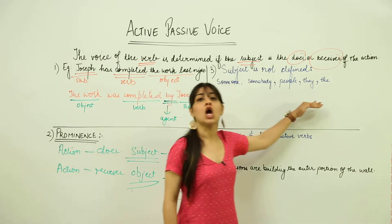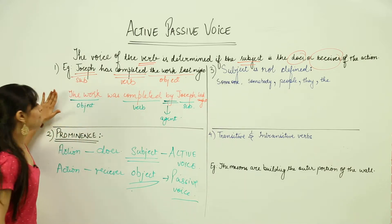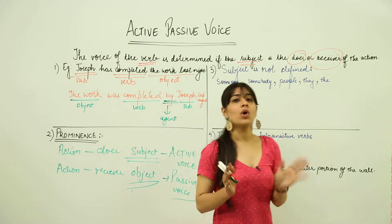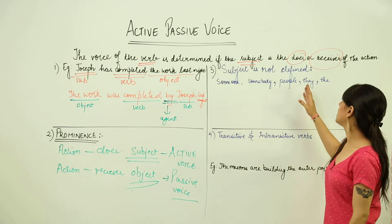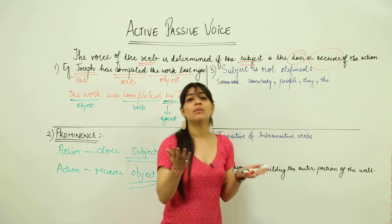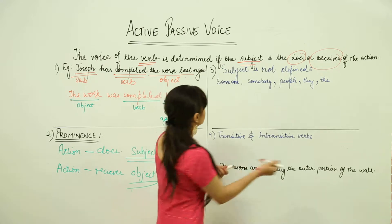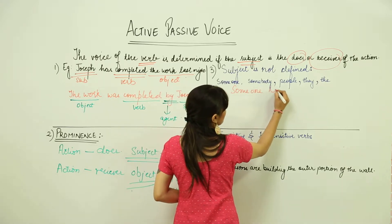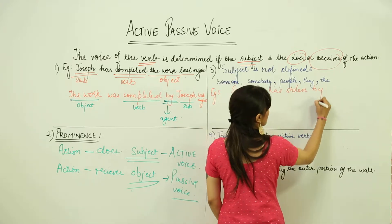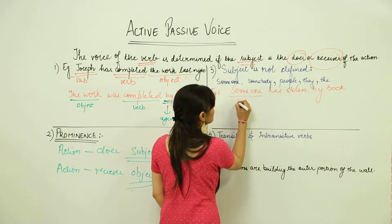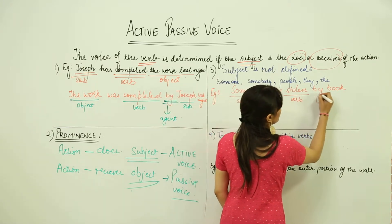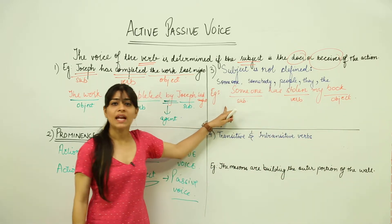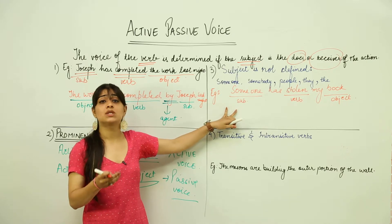In sentences where the subject is not defined properly, we generally tend to use the passive voice, because the subject is not definite or clearly defined. When certain words like someone, somebody, people, they, or 'the' are used, we tend to use the passive voice. For example, 'Someone has stolen my book.' Here someone is the subject, stolen is the verb, and book is the object. Since someone is not definite, we tend to use the passive voice.